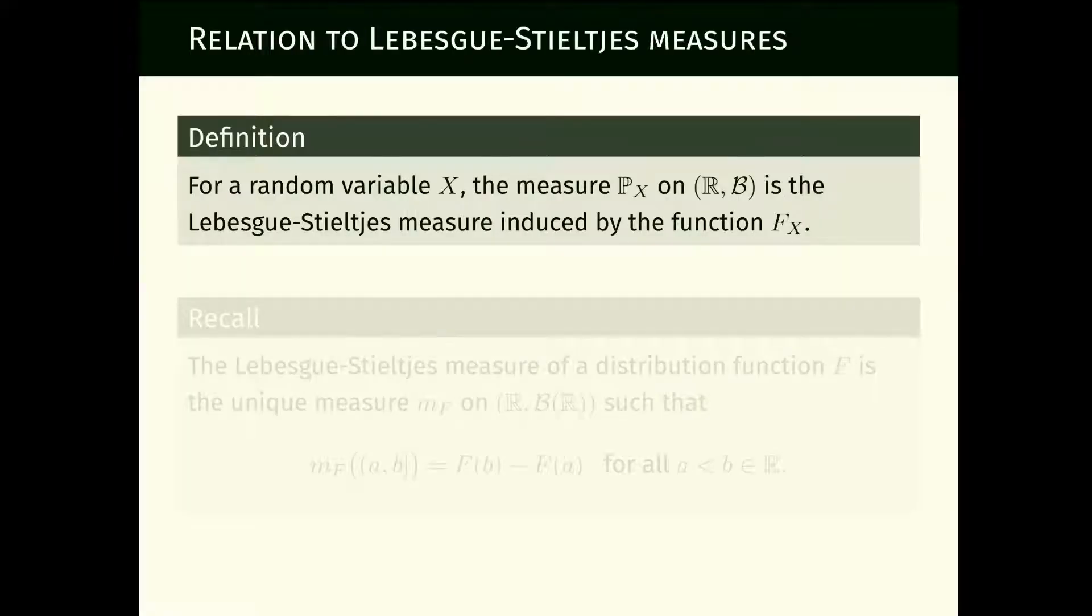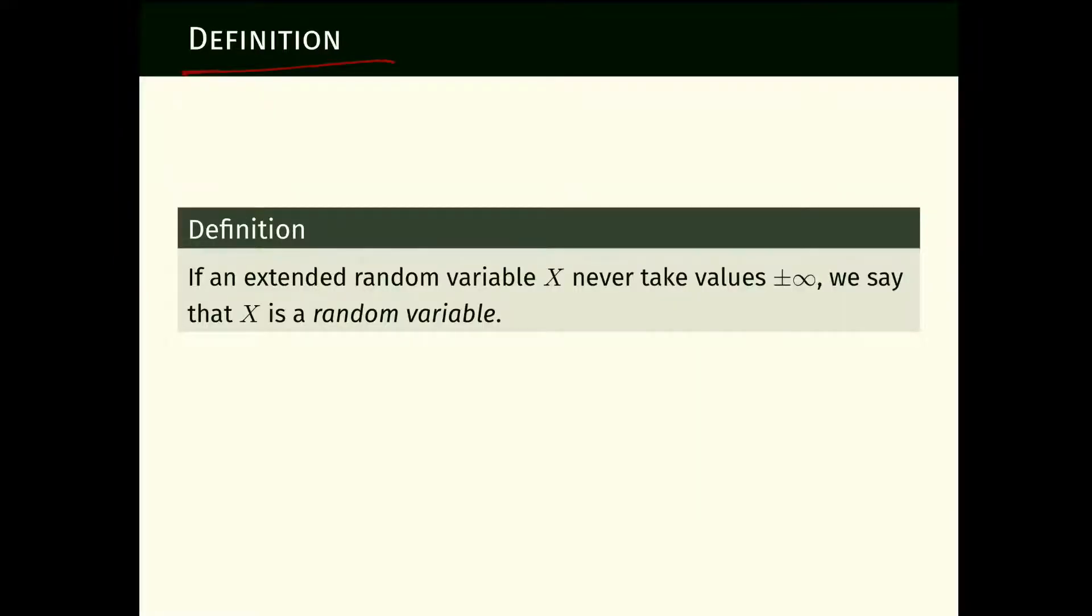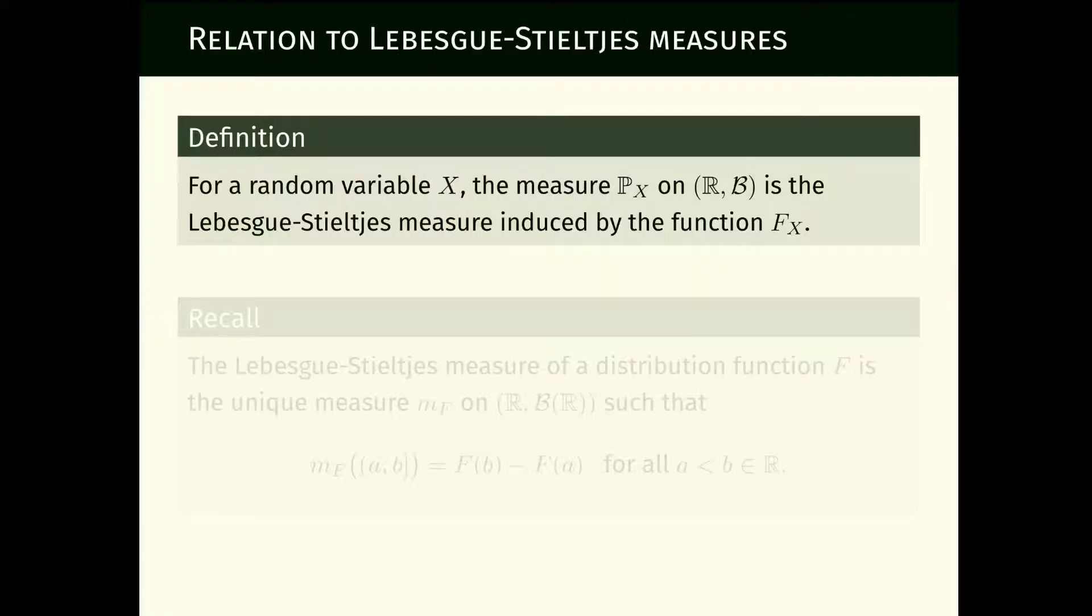Now I specialize to the case where these random variables never take infinite values. A random variable is an extended random variable that never takes values plus or minus infinity. In this case, its cumulative distribution function F_x has a very nice property: as you take t to minus infinity, this will tend to zero, and as you take t to plus infinity, this will tend to one.